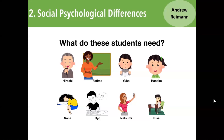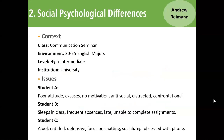I'm going to talk about social psychological differences in the classroom. When we have a group of students, they can have a number of hidden diversities and needs. The context I'm going to talk about is a regular communication seminar with 20 to 25 English majors at university. I'm going to specifically talk about three cases: Student A, with a poor attitude, lots of excuses, and no motivation; Student B, who often slept in class, had frequent absences, was late, and unable to complete assignments.